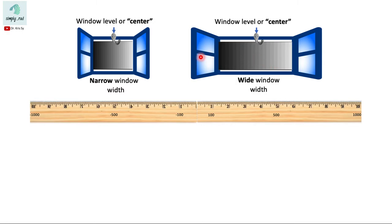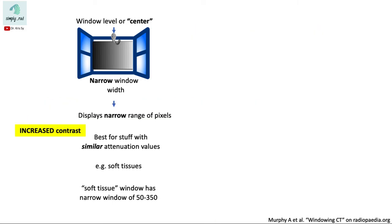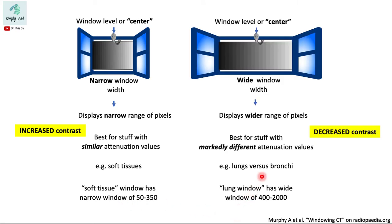So if you have a narrow range of pixels, you will have increased contrast. In other words, just a little change in the Hounsfield unit, there will be a marked change in its brightness. Therefore, a narrow window is best for checking tissues with similar attenuation values, for example soft tissues are similar to one another, therefore we use a narrow window.